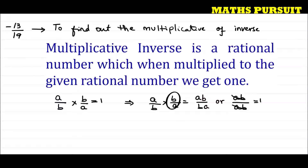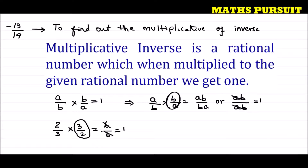Let us take some examples. If the question has given us 2 upon 3, then the multiplicative inverse of 2 upon 3 will be 3 upon 2. That means 2 upon 3 multiplied by 3 upon 2 gives 6 upon 6, which equals 1. So the multiplicative inverse of 2 upon 3 is 3 upon 2.